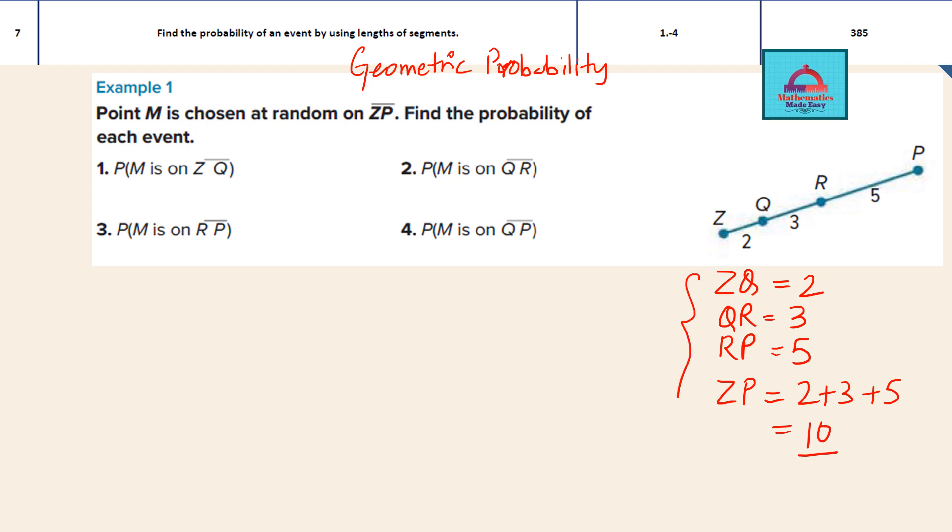Now we are going to use all these numbers, all these lengths for solving these questions one by one. Point M is chosen at random on ZP, so ZP is the longest line segment of length 10. We have to find the probability of each event. So the first one, the probability that the point M is on ZQ - if you remember from the lesson geometric probability, the length probability ratio is always the small segment, that is ZQ, divided by the total segment ZP. So you divide these two lengths and get your answer. ZQ is 2, the total length is 10, so this is going to be 1 by 5.